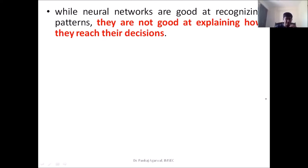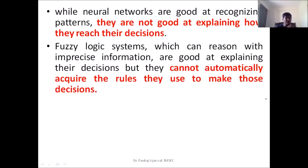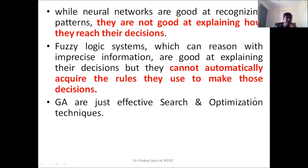Similarly, fuzzy logic systems can reason with imprecise information and are good at explaining decisions, especially where there are issues with inputs and outputs. But fuzzy logic has an issue: it cannot automatically acquire rules the way neural networks do. There is nothing called automated learning associated with fuzzy systems, so decision making must be embedded in a hard-coded manner. Genetic algorithms are very effective search and optimization techniques, but we cannot apply GA alone for most problems — we need to fuse them with other technologies.